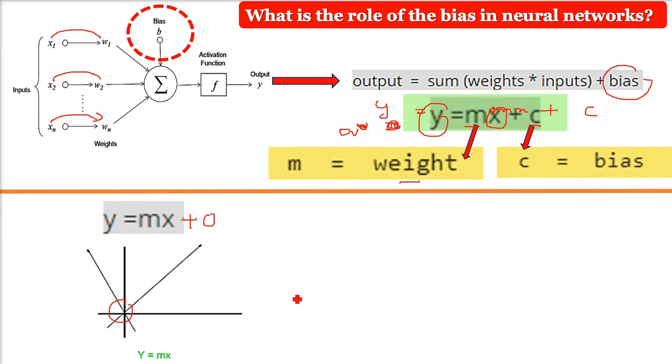Also, with the introduction of bias, the model will become more flexible as you see here. This is the real world scenario. Otherwise, it will always pass through the origin, which we do not want. That is why we have a bias.